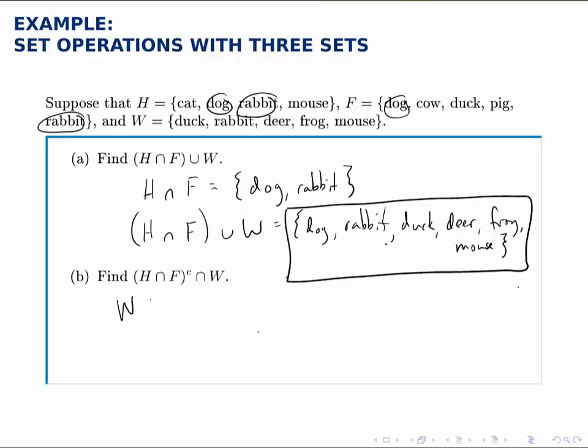Another way to see this is if you wrote it this way, with a set difference. Because the complement of one thing intersected with something else is the same as that set difference. But either way you think of it, what you should find is all the elements of W except for rabbit.